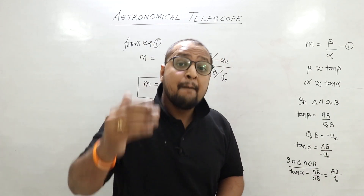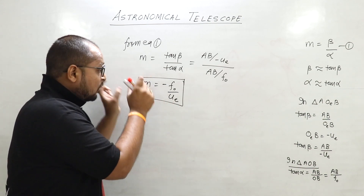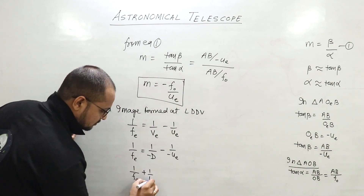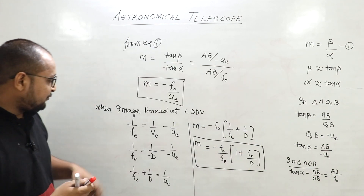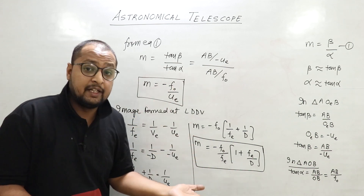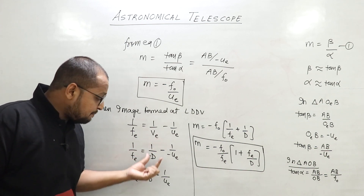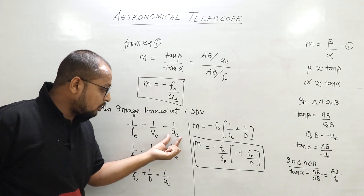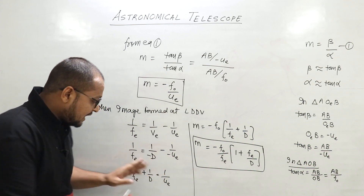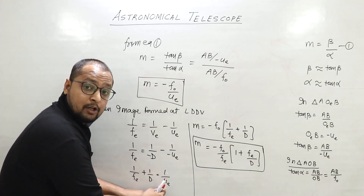The lens formula is: 1/v minus 1/u. This formula is valid everywhere. We are modifying this formula in terms of fe — let's see what comes. Applying the formula: 1/fe = 1/ve minus 1/ue. I cannot change fe. What is the value of ve? It is minus d, because the image is forming at the least distance of distinct vision. And ue is minus ue on that side. So rearranging: 1/fe + 1/d = 1/ue.